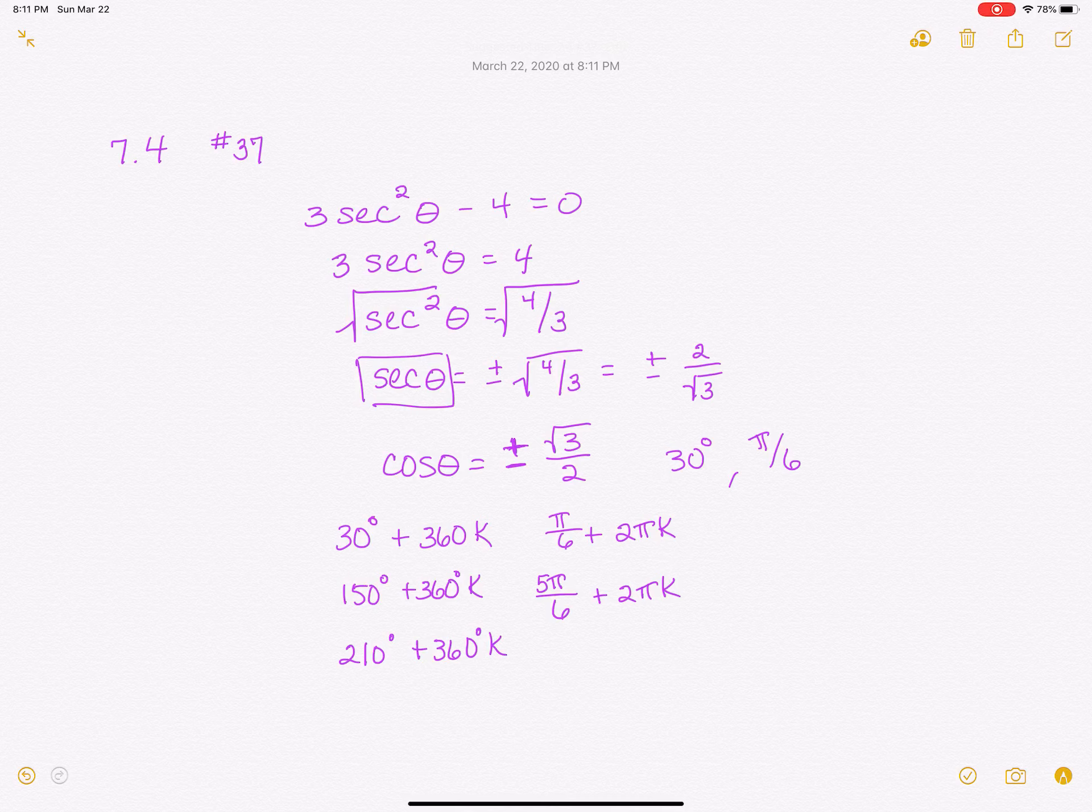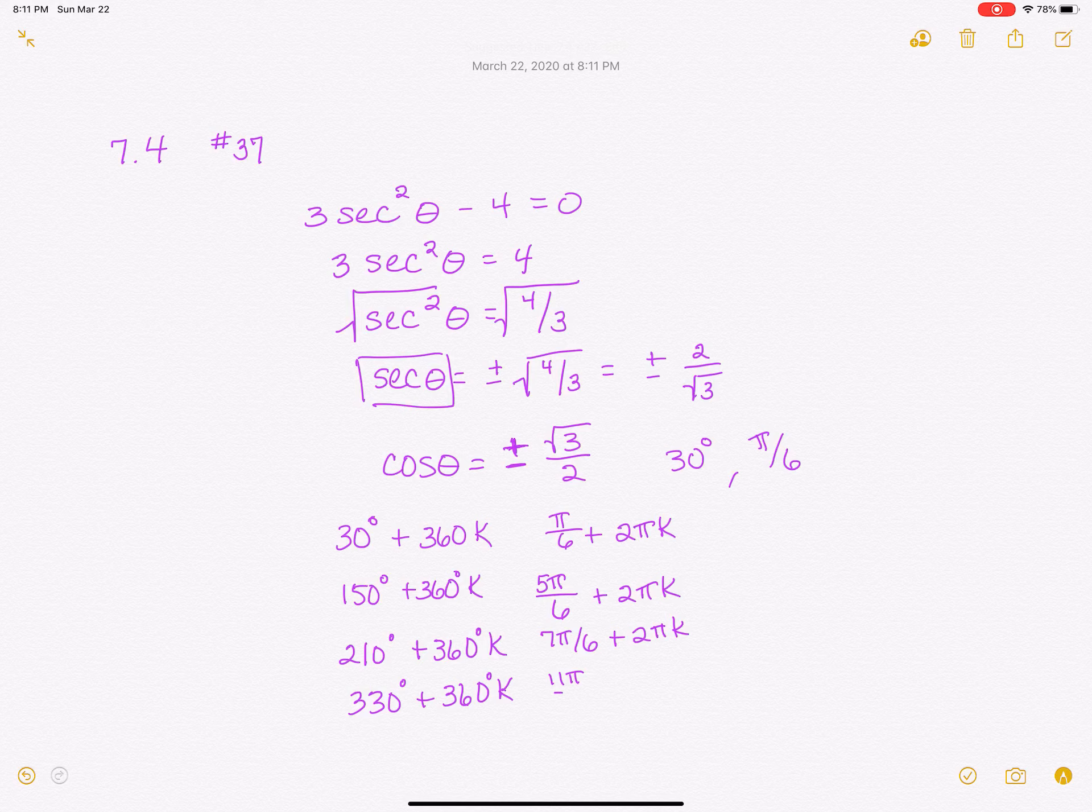And in the fourth quadrant, I would get 330 degrees plus 360 k. Now if I were writing this in radians, that would be 7 pi over 6 plus 2 pi k. And this one would be 11 pi over 6 plus 2 pi k.